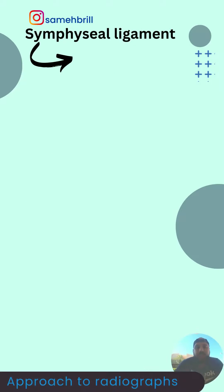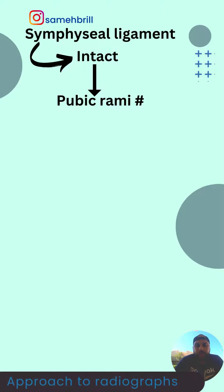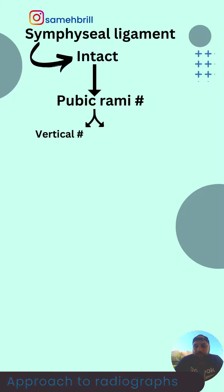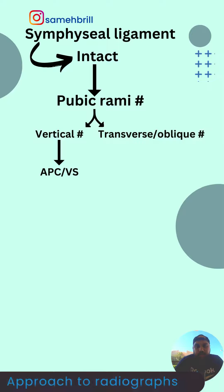Now if the symphysial ligaments are not disrupted, I'll go for the pubic rami to check if there is any fracture. If there is a vertical fracture, that might be an APC fracture or a vertical shear. If it's a transverse or oblique fracture, that might be an LC fracture.